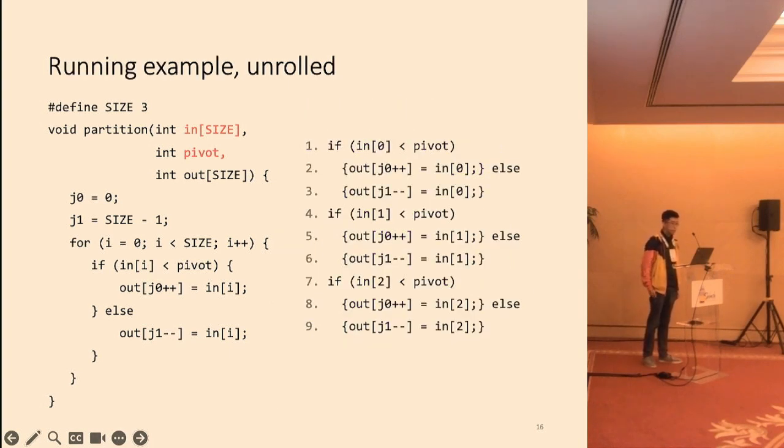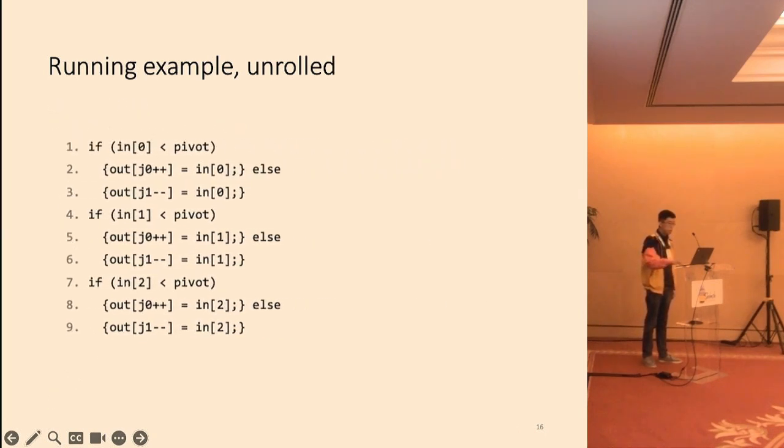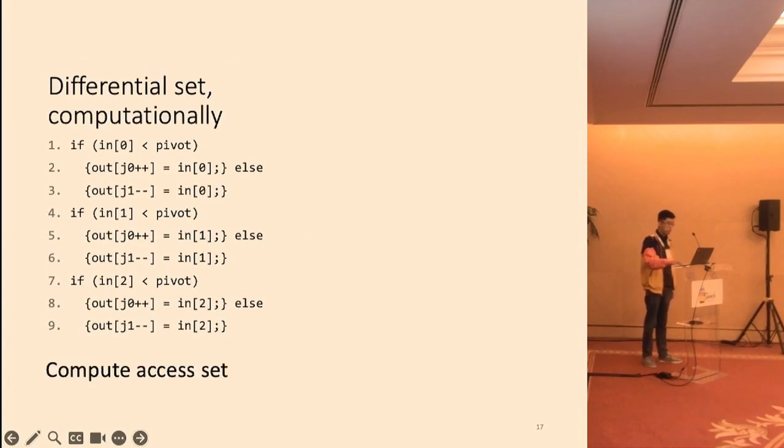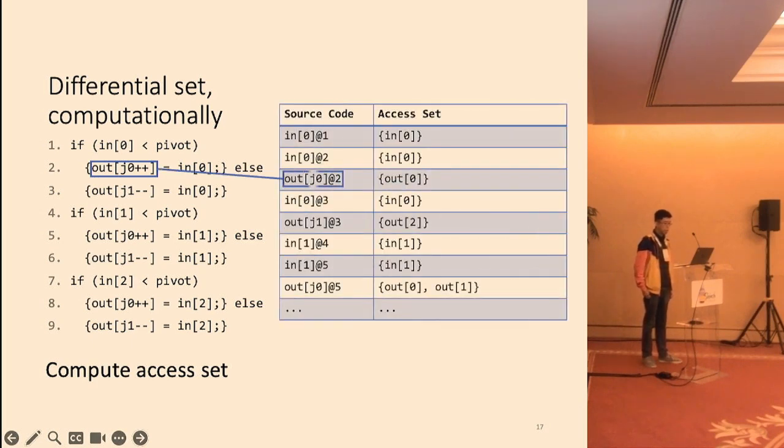In the next few slides, I will discuss how the differential sets are computed. To simplify the discussion, we will use an unrolled version of the running example. As a first step, we will compute the access set for every memory access in the program. Access set is defined as a set of concrete memory addresses that a memory access instruction can reach. For example, out[j0] on line 2 can only reach out[0], because j0's initial value is 0. So access set will have one element, as shown in the table.